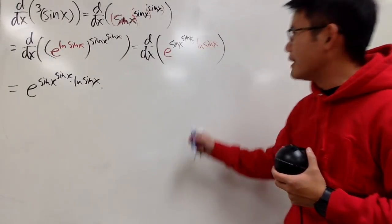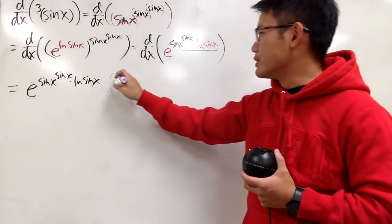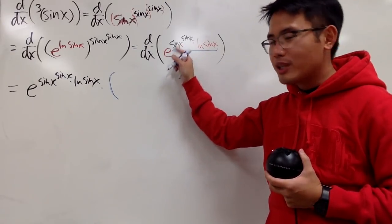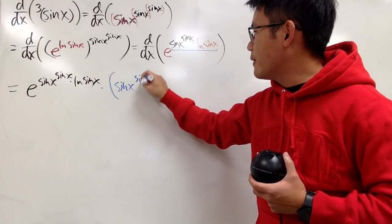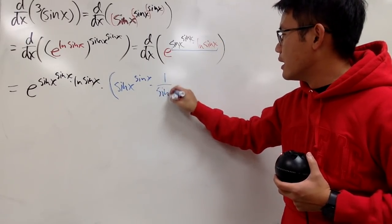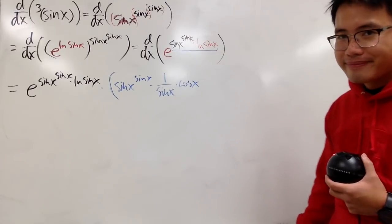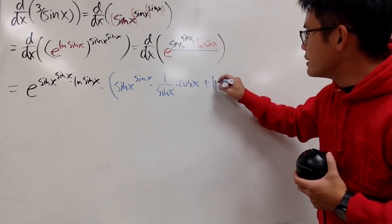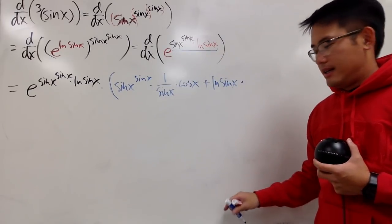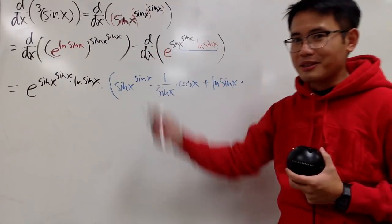The chain rule says we have to multiply by the derivative of this guy here. And we have a product, so we have to use the product rule — or the Gucci rule if you would like. I'm going to keep the first function, which is sin x to the sin x power, and then multiply by the derivative of ln of sin x, which is 1 over sin x times cos x by the chain rule. Then we add the second function, which is ln of sin x, times the derivative of sin x to the sin x.